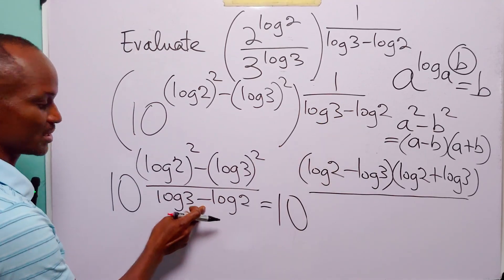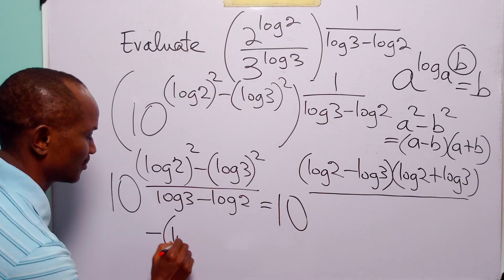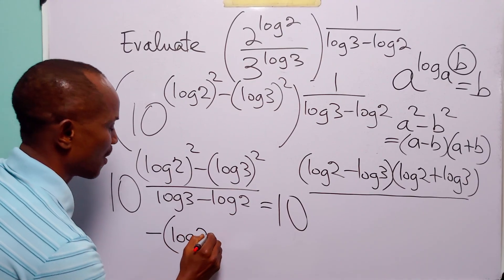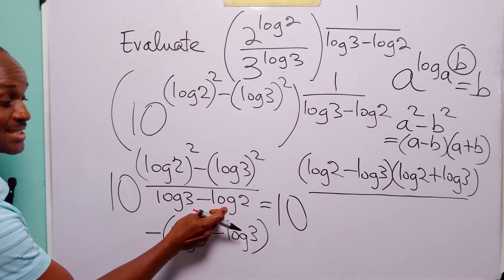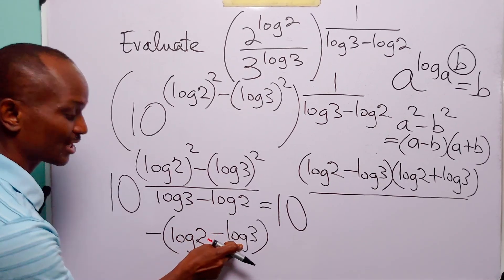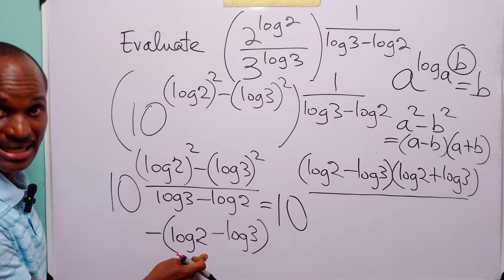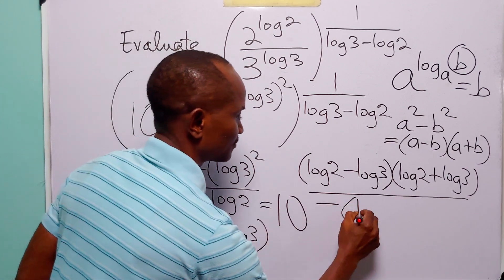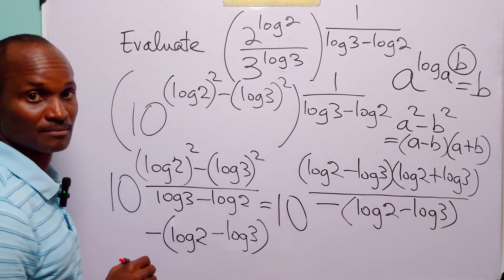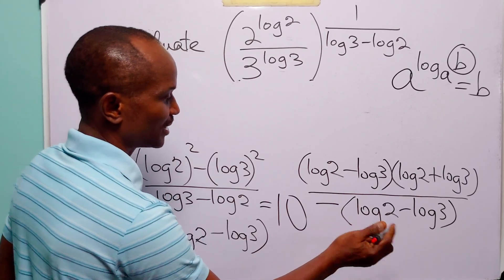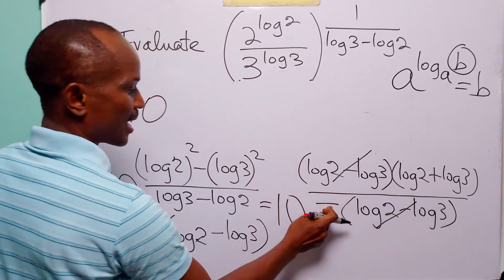Now let us look at the denominator. We can write log 3 minus log 2 as minus (log 2 minus log 3). This takes care of that factor in the numerator, canceling it and leaving us with 10 to the power minus (log 2 plus log 3).